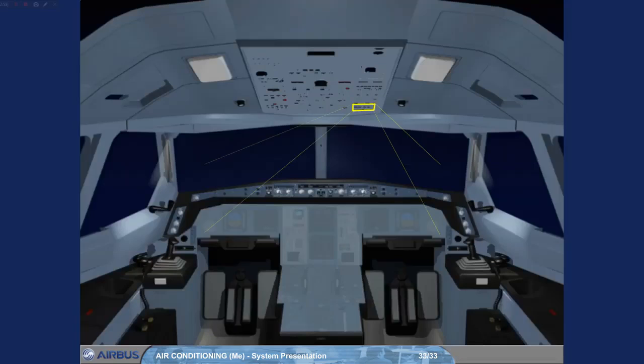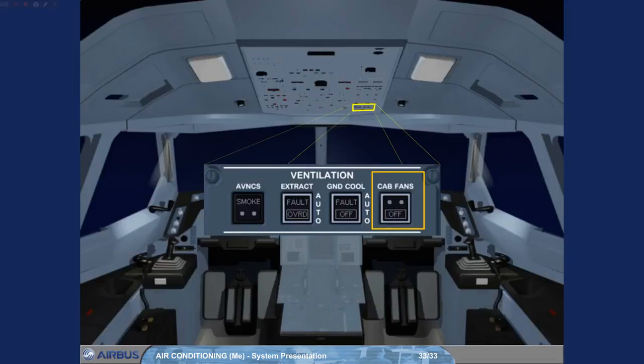A cabin fans push-button switch on the ventilation panel of the overhead panel controls the cabin fans. This push-button switch can be used to switch the fans off in response to an ECAM procedure.